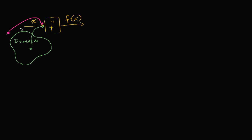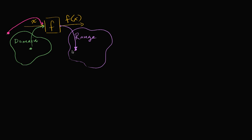Now, another interesting thing to think about — and that's actually the focus of this video — we know the set of all valid inputs is called the domain, but what about the set of all of the outputs that the function could actually produce? We have a name for that. It is called the range of the function. The most typical definition for range is the set of all possible outputs.